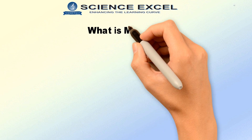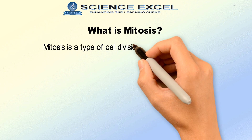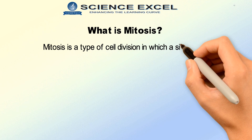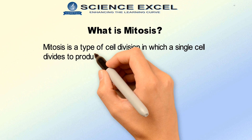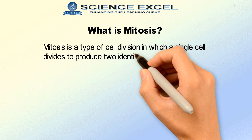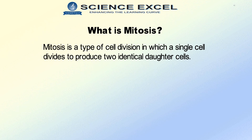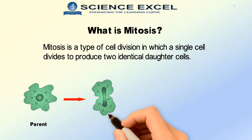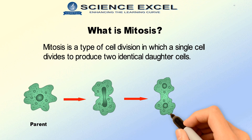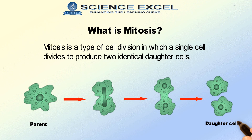So what is Mitosis? Mitosis is a type of cell division in which a single cell divides to produce two identical daughter cells. A detailed review on the process of Mitosis will be dealt with in the next tutorial.